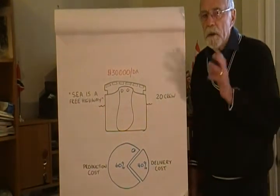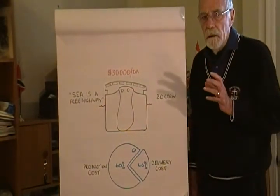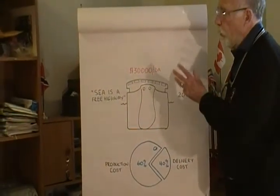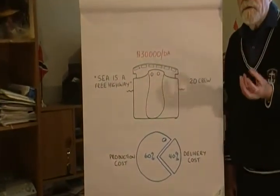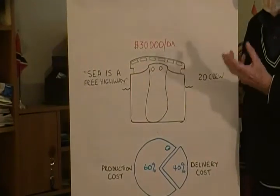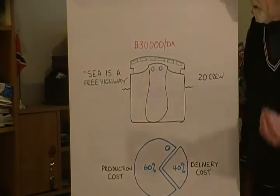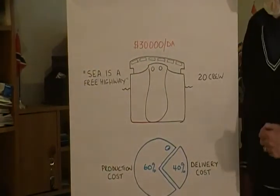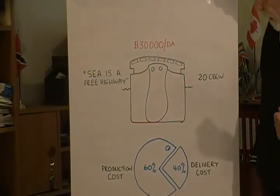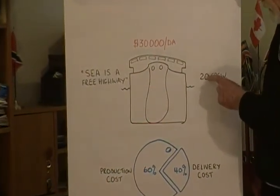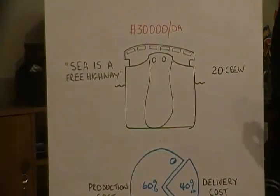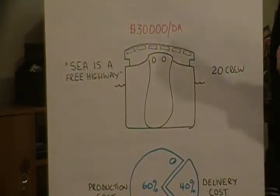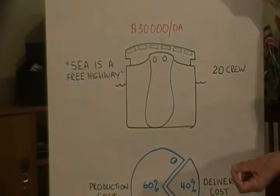I would like you to have a look at this vehicle that we call a ship. An average size ship is around about 30,000 tons deadweight — that's its carrying capacity. That's going to cost around about $30,000 a day and it has a crew of 20. Just to remind us, the sea is a free highway.